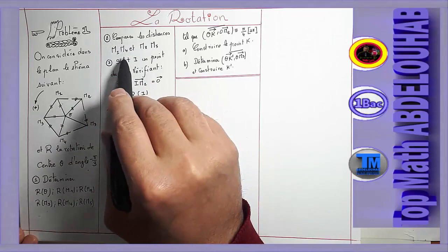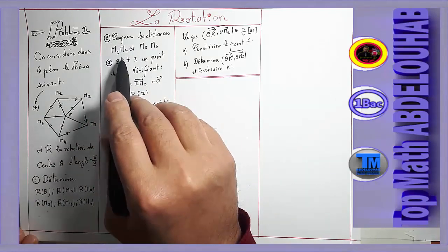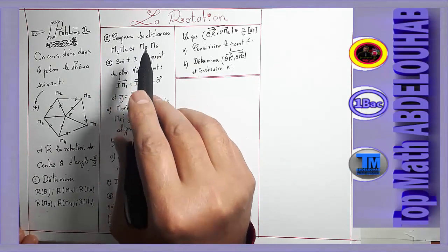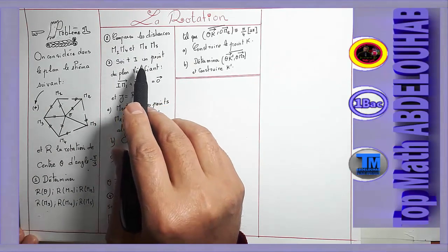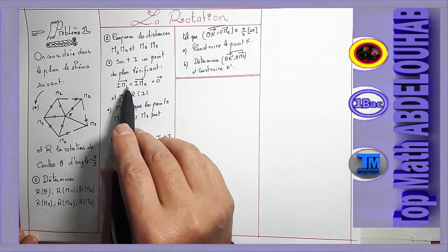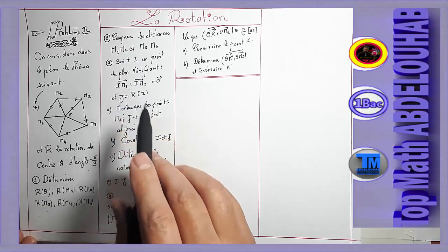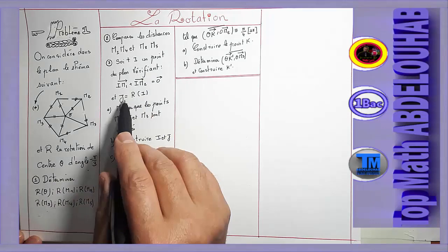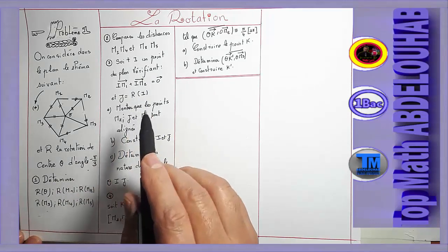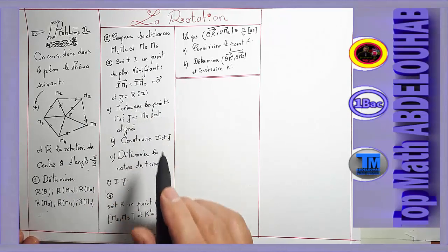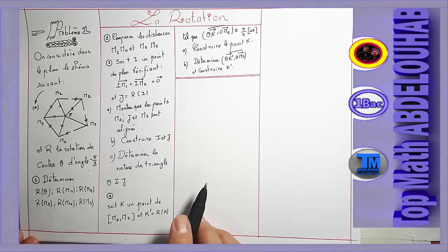La deuxième question : comparer les distances M1M4 et M2M5. Soit I un point du plan vérifiant le vecteur IM1 plus IM2 égale vecteur nul, et J égale R(I). Montrer que les points M2, J et M3 sont alignés.